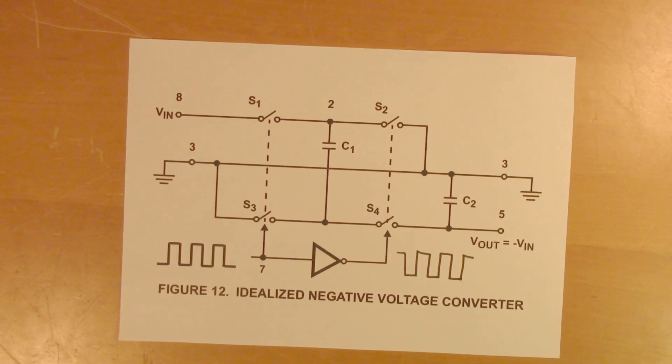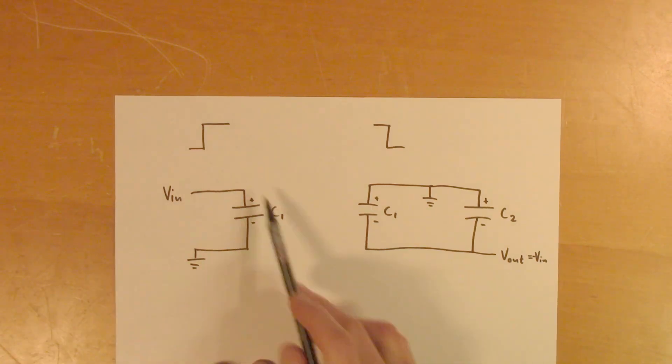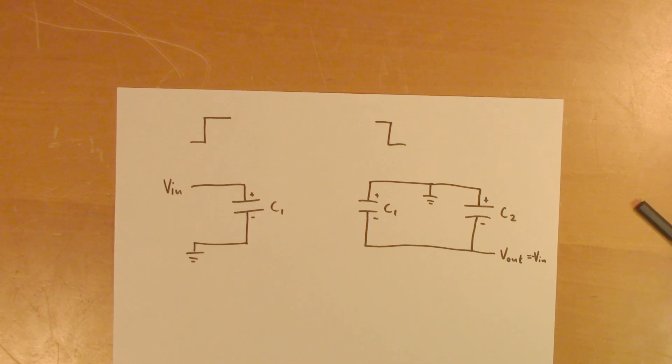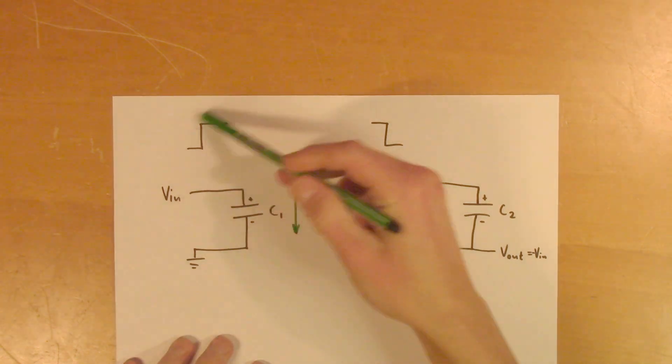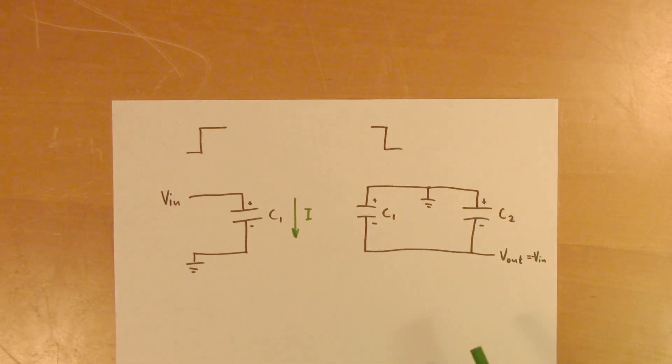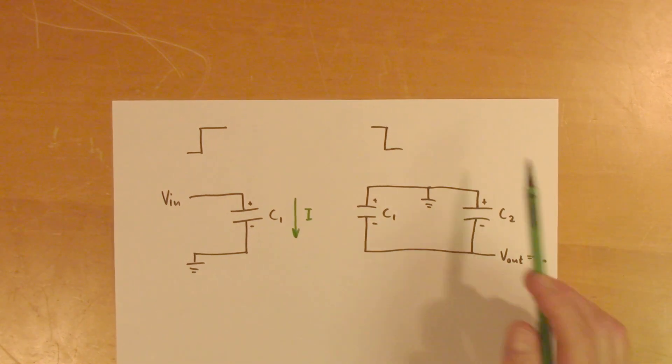So I've drawn an equivalent circuit of the two cases. So on the positive flank, we have this circuit. Current will be flowing into the capacitor this way. On this part of the cycle, charging this capacitor. And on the negative part of the cycle, the equivalent circuit will look like this instead.